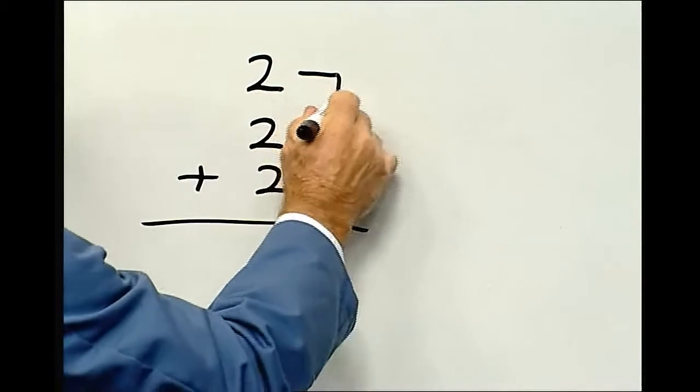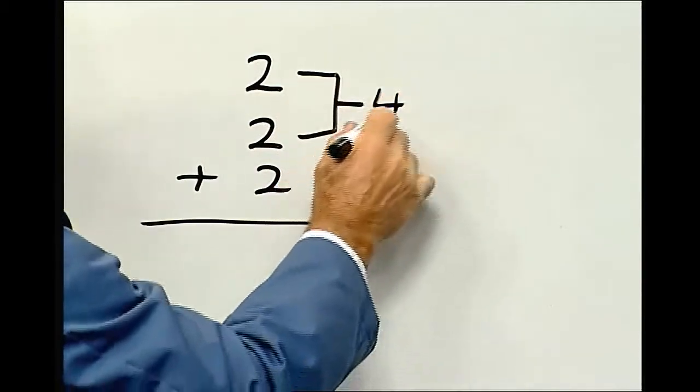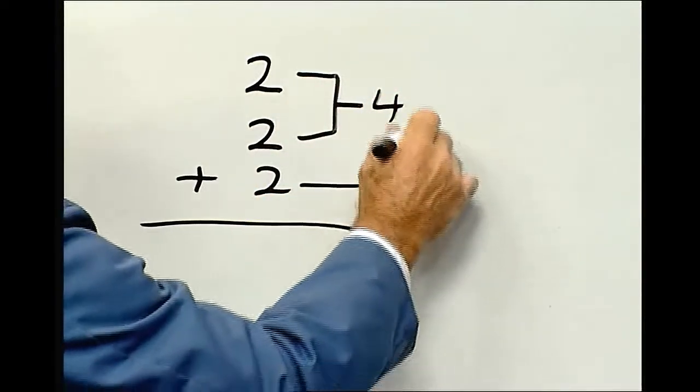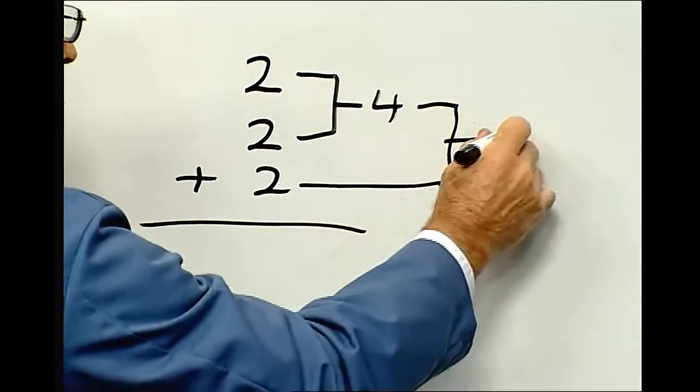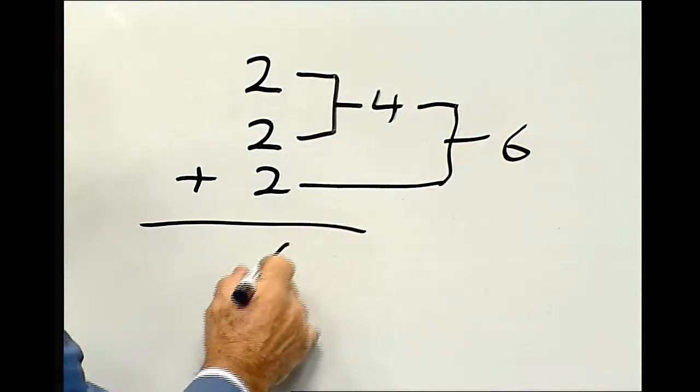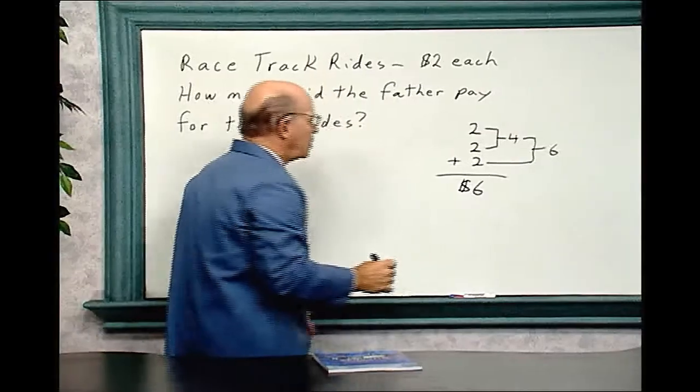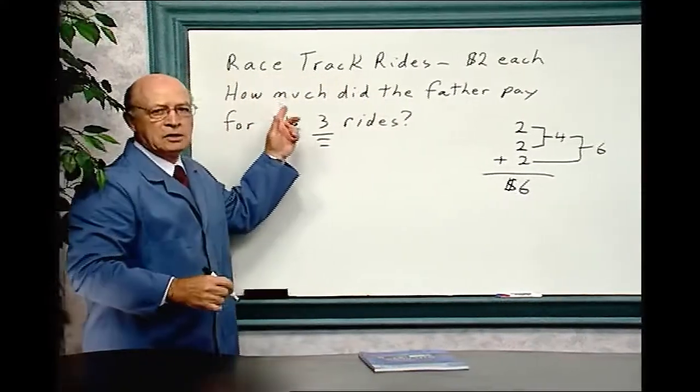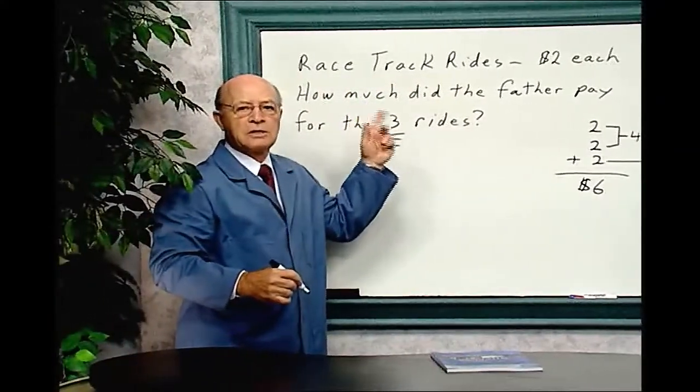So two plus two equals four. And four plus two equals six. So that would cost six dollars. So for the three rides, it will cost six dollars.